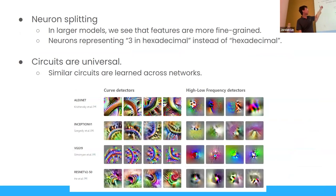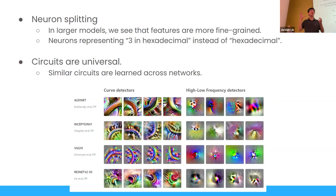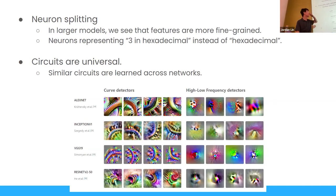There's this thing called neuron splitting. If we project our activation space onto higher and higher dimensional feature spaces, features become more and more fine-grained. In larger models, or projecting to a larger feature space, we have features representing more fine-grained things. In GPT-2 versus a toy model, we can see features like 'three in hexadecimal' as opposed to just a feature representing hexadecimal. Smaller models projected to larger feature spaces will just have dimensions that don't represent anything.